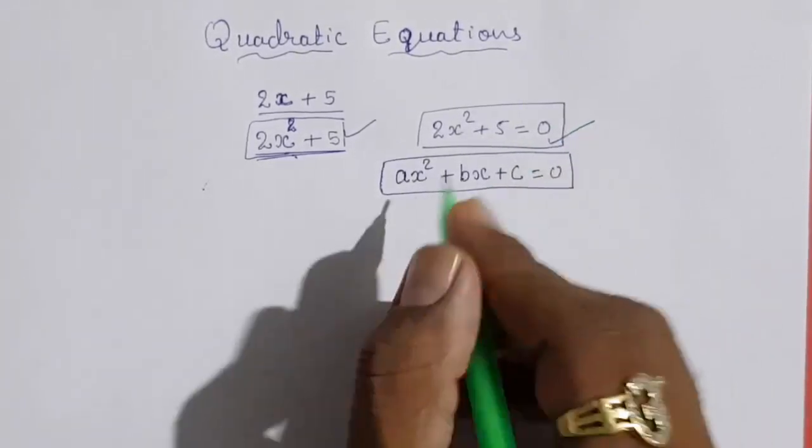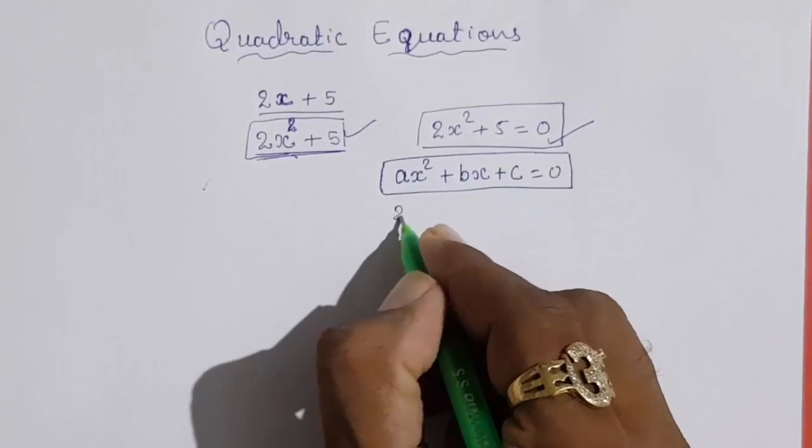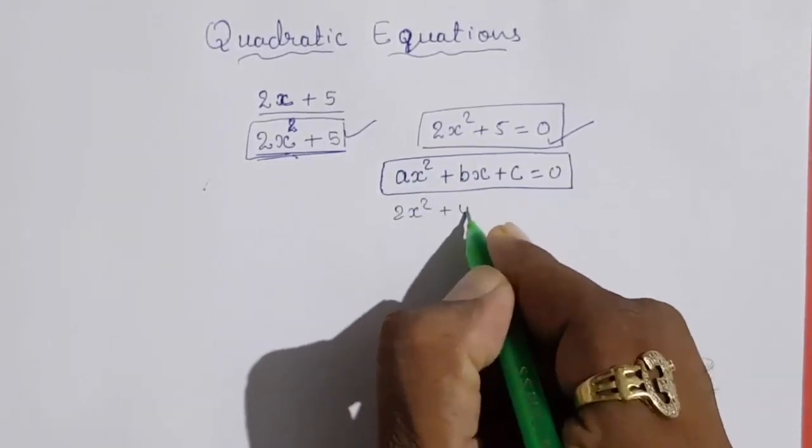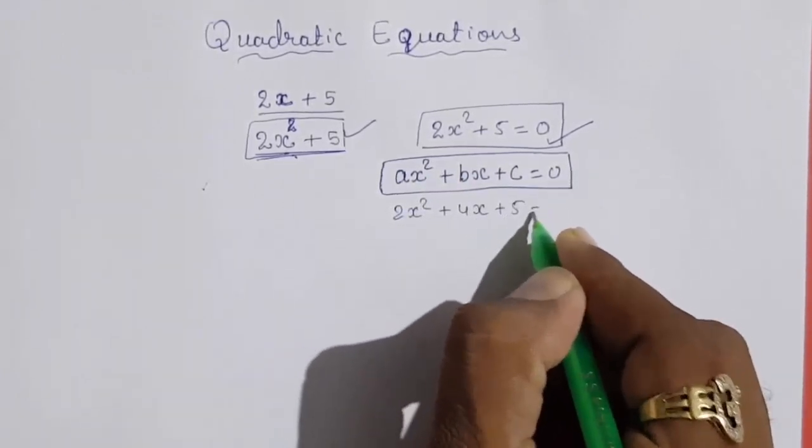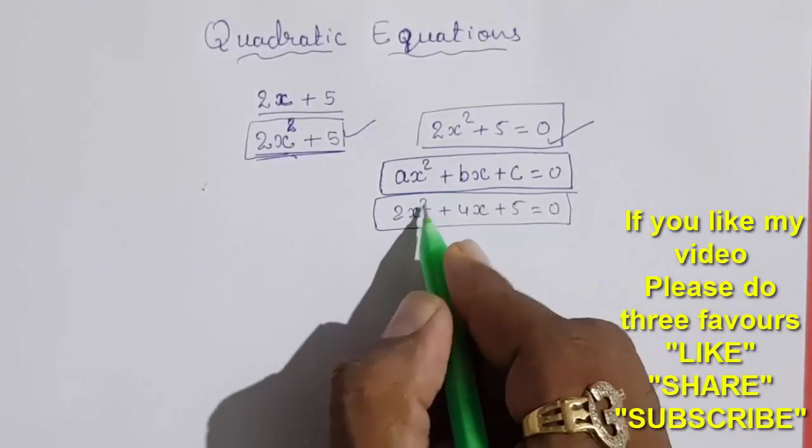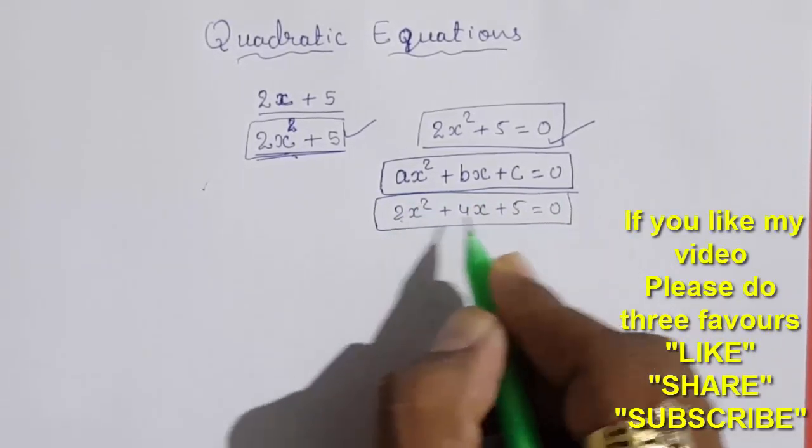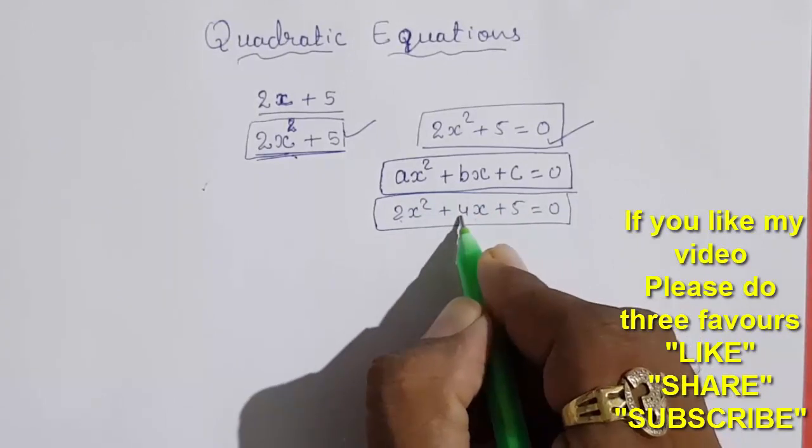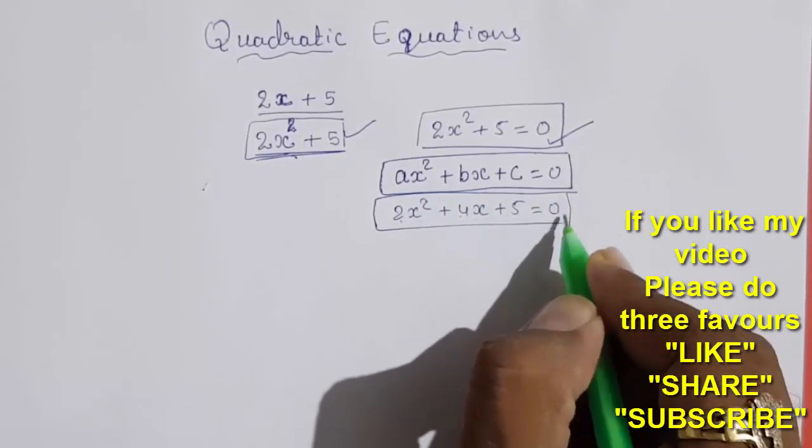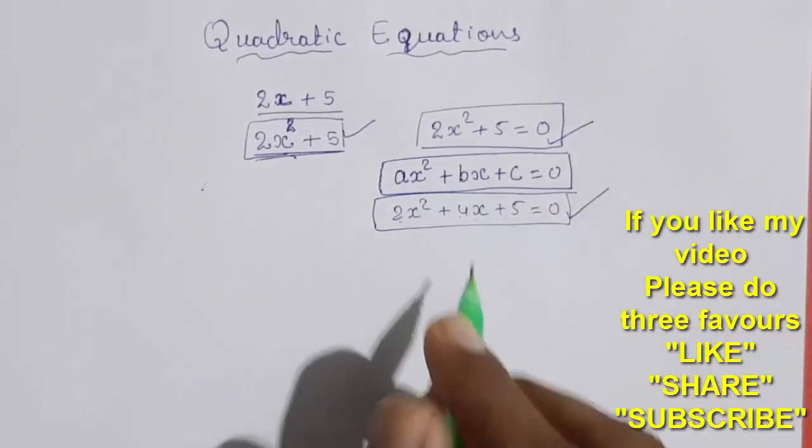This is also a quadratic equation. You will see numbers like this: 2x² plus 4x plus 5 equals 0. The number with x² that will be your a. The number with x that will be your b. And the last number that will be your c. This is your quadratic equation.